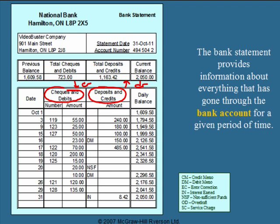The bank statement often has codes that explain transactions on the bank account. Somewhere on the bank statement, you'll see a legend that explains what the codes mean. DM stands for debit memo, NSF stands for non-sufficient funds, and IN stands for interest earned.